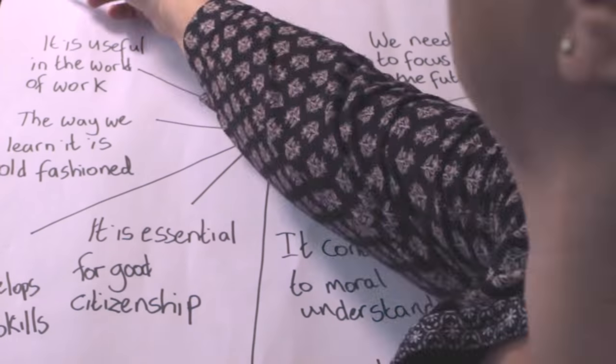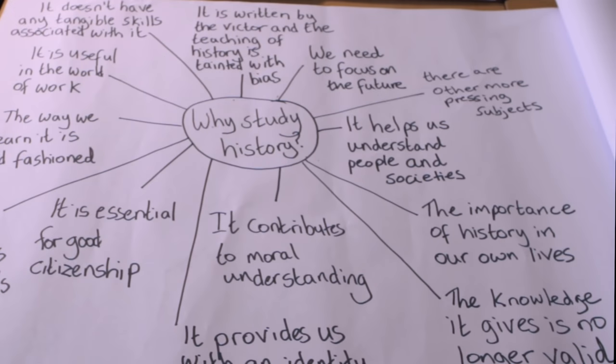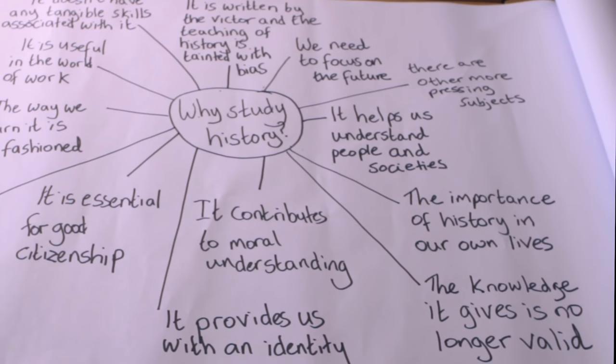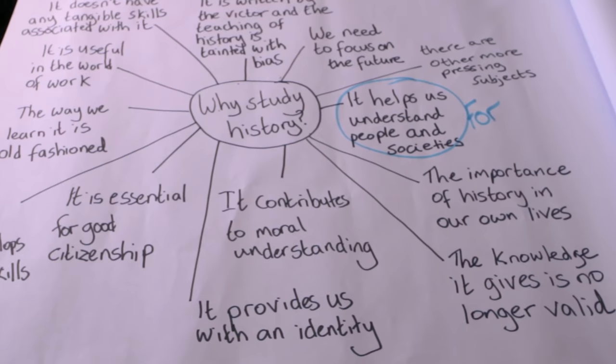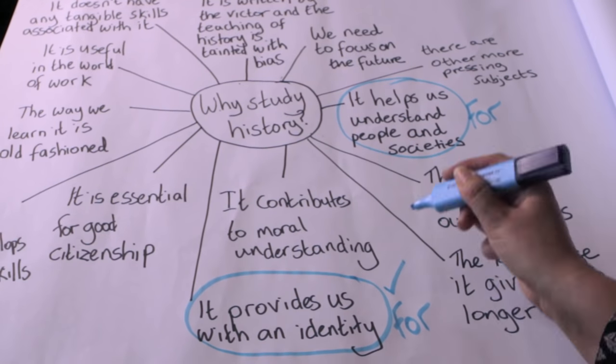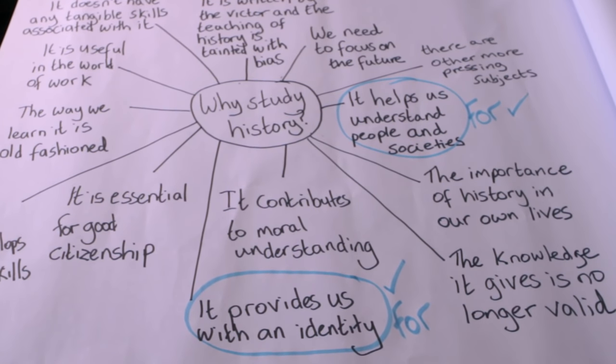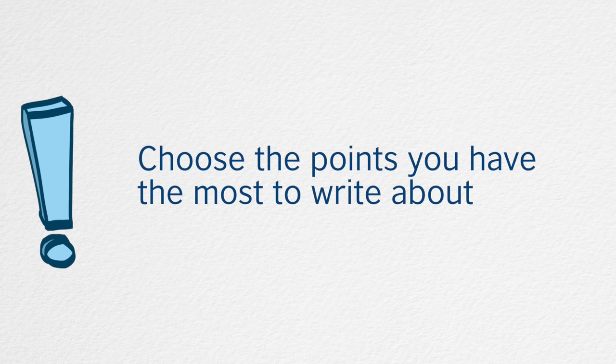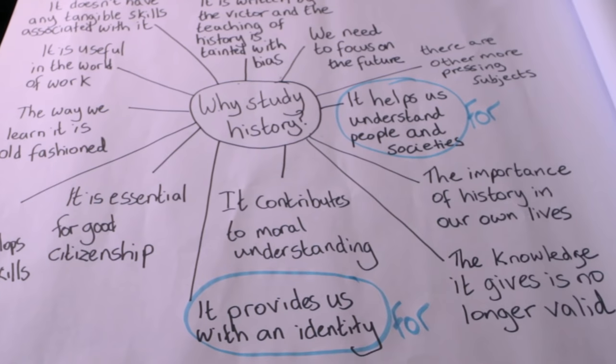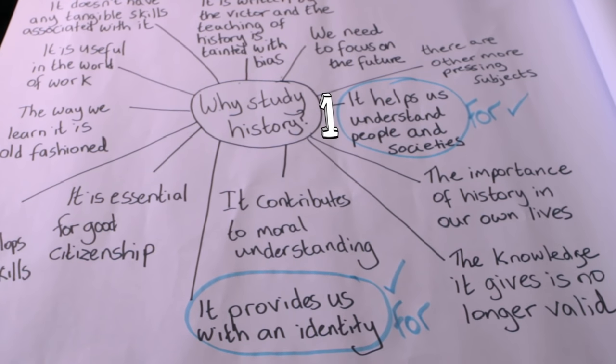Decide which points are positive and negative. Choose the two strongest ideas to support your opinion. You will need to think of an additional point connected to each, followed by an example, so choose the points you have the most to write about. These will be your main ideas for body paragraphs one and two.